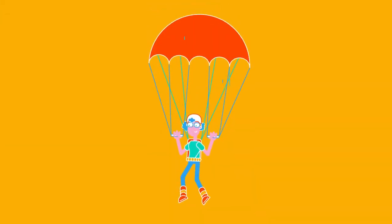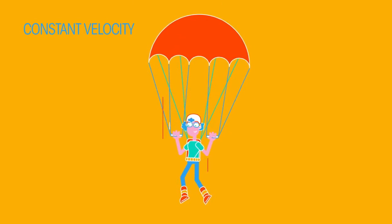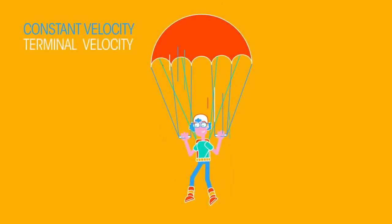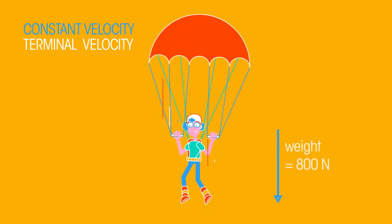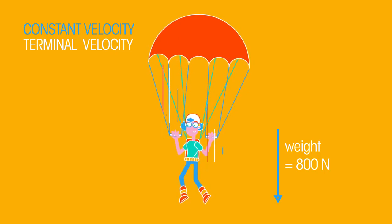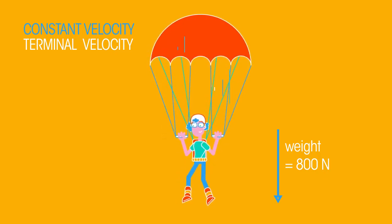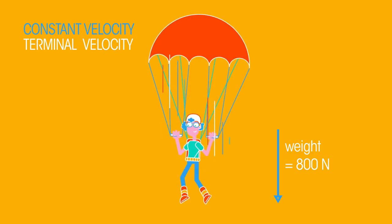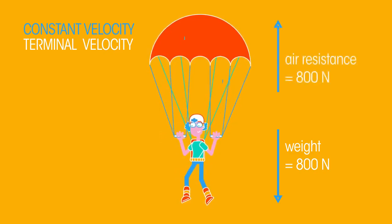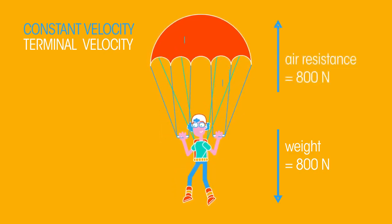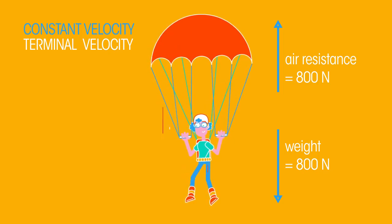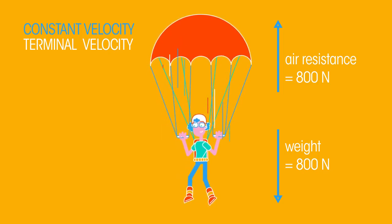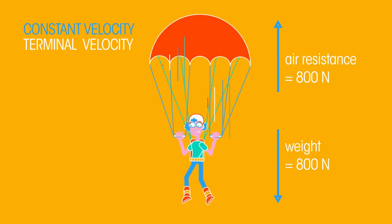This parachutist is falling through the air at a constant velocity, also known as terminal velocity. There is a force of 800 newtons acting downwards on the parachutist. This is the parachutist's weight or the force due to gravity. At the same time the parachutist experiences an upward force of 800 newtons due to air resistance. These forces are balanced so she will be falling at a constant velocity.